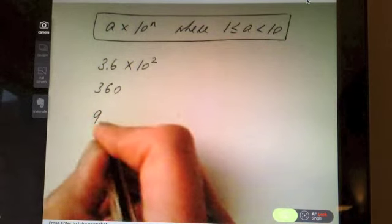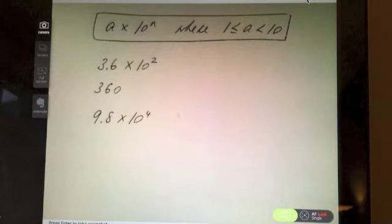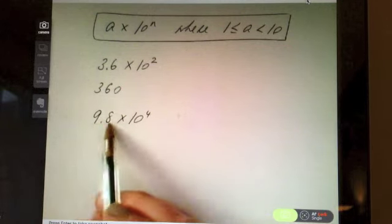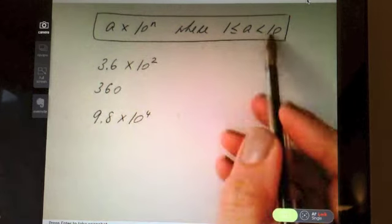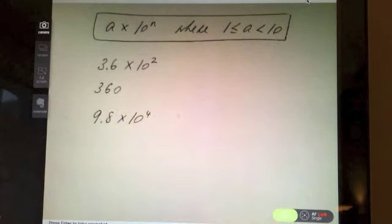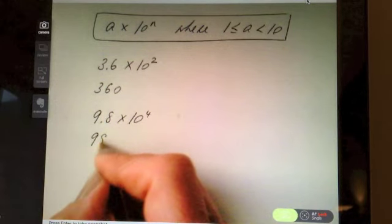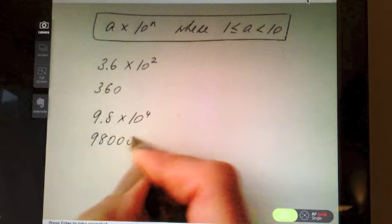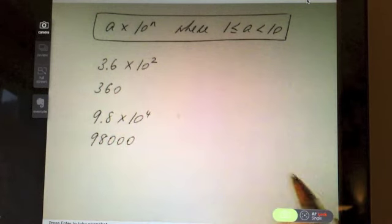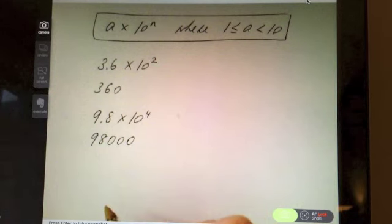Take, for example, 9.8 times 10 to the power of 4. Pause the video there now and see if you can write that into an ordinary number. That is it in standard form. Our number here is between 1 and 10, and then it's times 10 to a power. And so, the answer is 98,000. Again, you can always fall back to the calculator to get your correct answer on this.